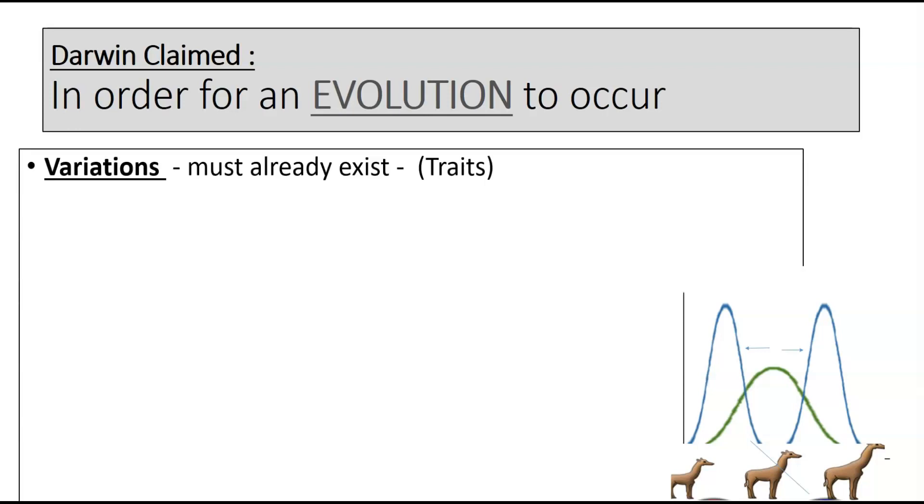For example, variations. Darwin suggested that variations in a group or species must already exist. In other words, there has to be different traits that are already there in the group. If the group all has the same trait, then there's nothing for natural selection to choose from. There has to be some rare and some not-so-rare traits already present before the environment changes.